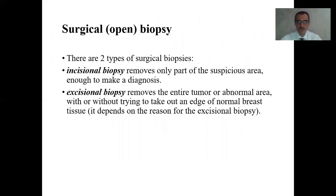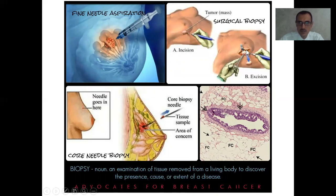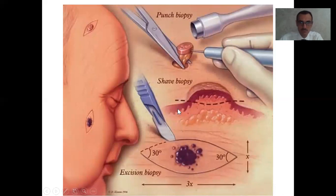Surgical biopsy includes incisional and excisional biopsy. Incisional biopsy removes only part of the suspicious area, enough to make a diagnosis. Excisional biopsy removes the entire tumor or abnormal area, with or without trying to take out an area of normal breast tissue, depending on the reason for the biopsy. Here you see illustrations of fine needle aspiration, core needle biopsy from the breast, and incisional and excisional surgical biopsies. Types of excisional biopsy include shave biopsy and punch biopsy.